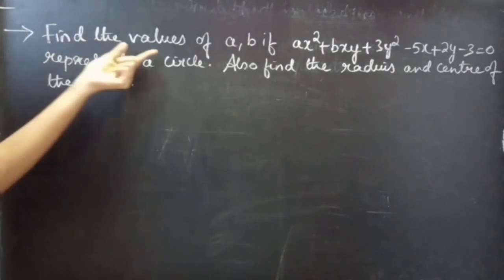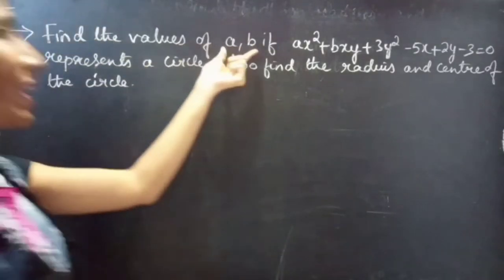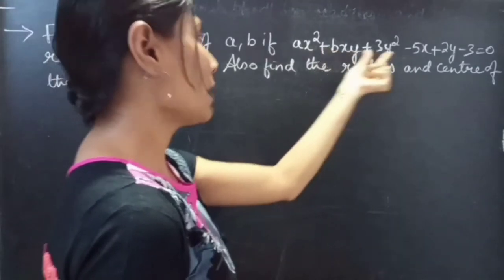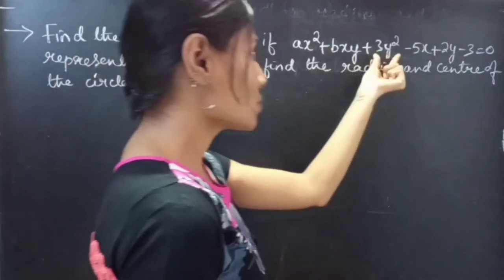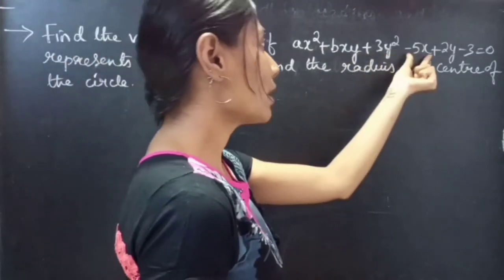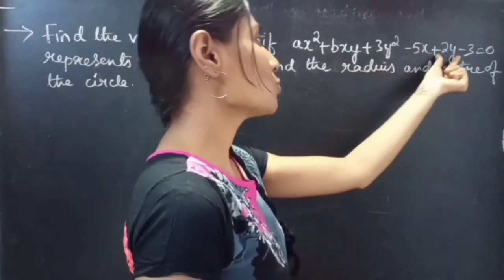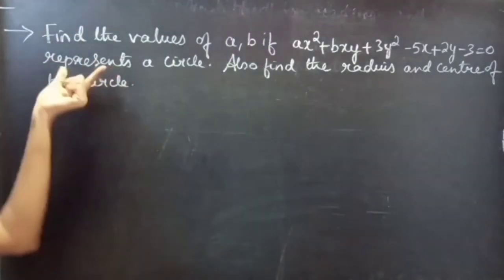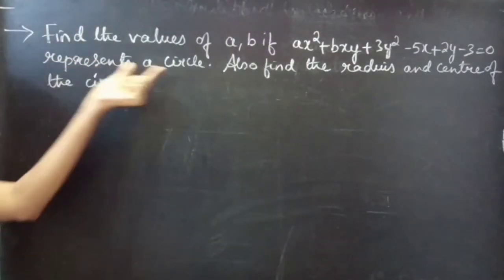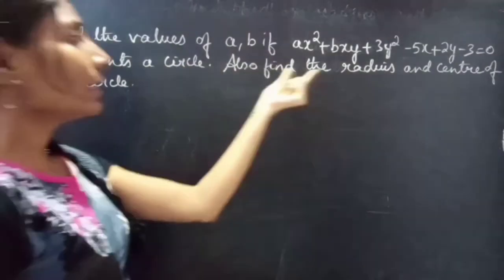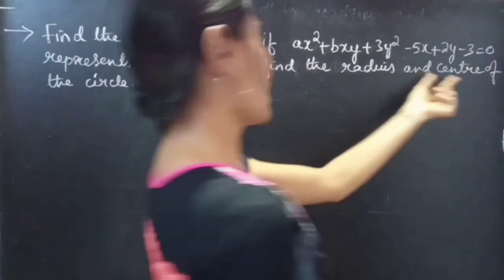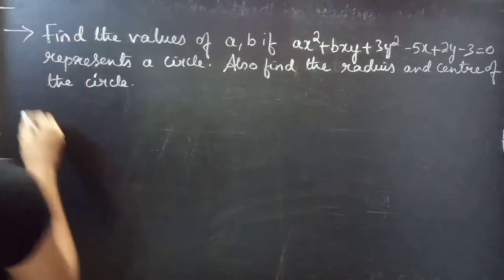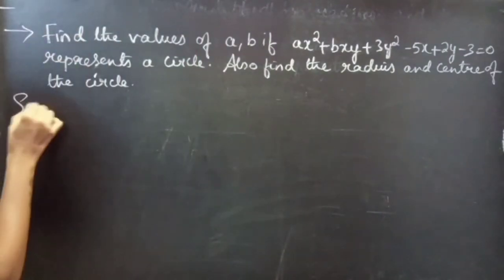Problem: Find the values of A and B if A x squared plus B x y plus 3 y squared minus 5 x plus 2 y minus 3 equals 0 represents a circle. Also find the radius and center of the circle.